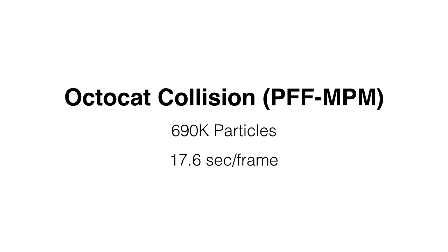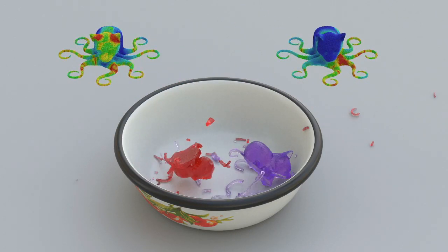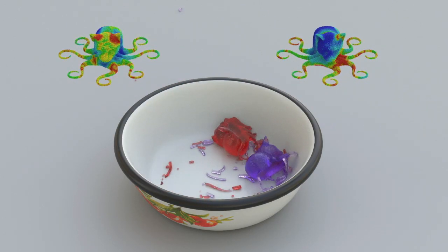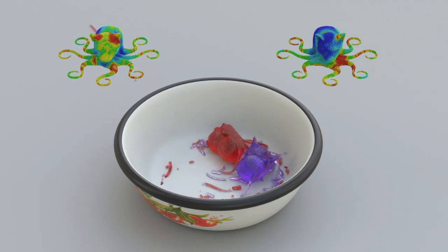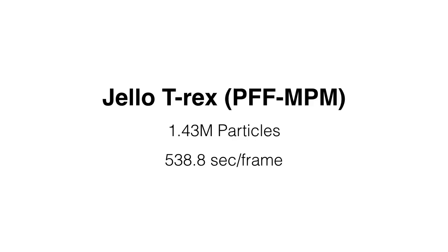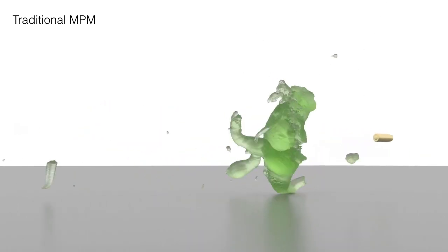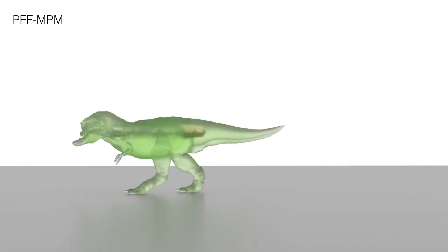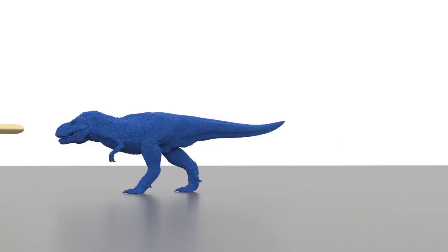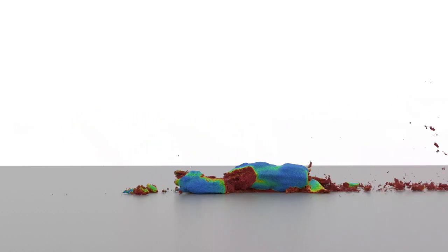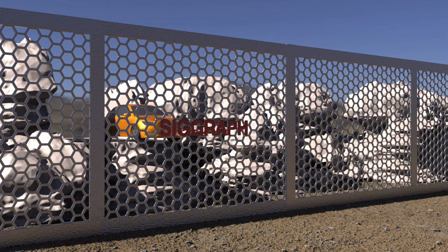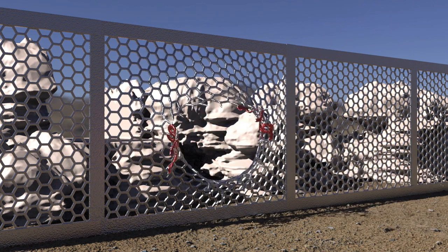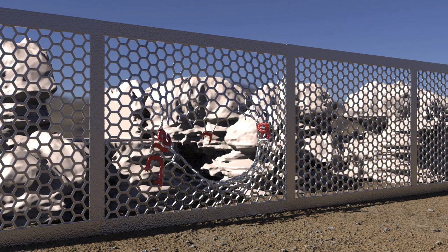Now for some less edible objects using PFF-MPM. Two octocats collide into a bowl with their material space phases visualized. During a high-speed bullet impact, traditional MPM breaks in a physically unrealistic way due to uncontrollable numerical fracture. Conversely, PFF-MPM produces a clear trajectory through the T-Rex. And here we visualize the phase field. A combination of von Mises plasticity and PFF-MPM phase field damage allows this car smash to produce ductile fractures with intricate shapes.